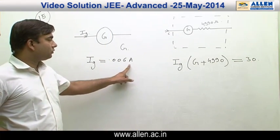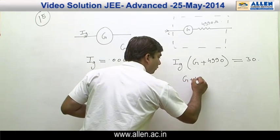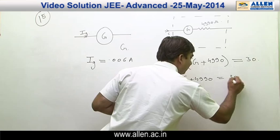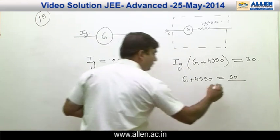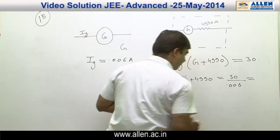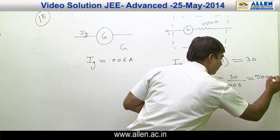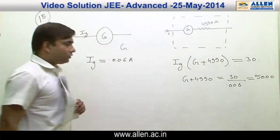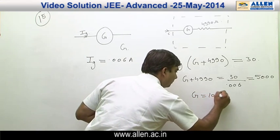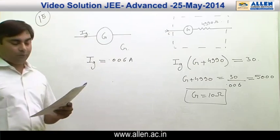Substituting IG = 0.006, we get G + 4990 = 30 / 0.006 = 5000. Solving this, G = 10 ohm. So the resistance of the galvanometer is now known to be 10 ohm.